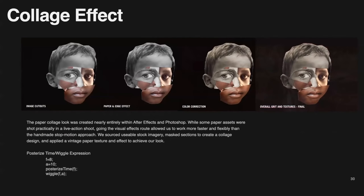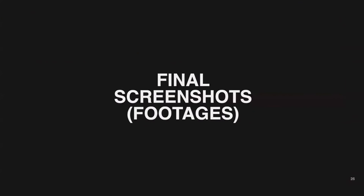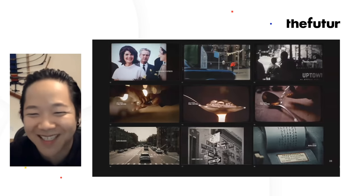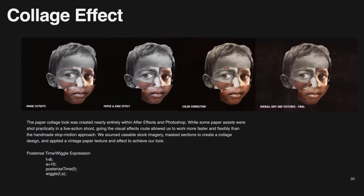I wanted to talk about the overall collage effect. When people saw this, they asked 'how'd you make this?' because it's very tactile, it looks papery, and it has a jittery stop-motion look. If we'd filmed this practically, it would have been impossible — I'd probably still be making it. I decided it was totally viable and efficient to create this entirely in After Effects and Photoshop. While some paper elements were shot practically in a live action shoot to get some textures or help with transitions, about 95% of it was all After Effects and Photoshop — and actually simpler than you'd think to create this effect.